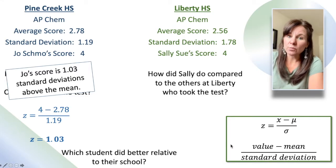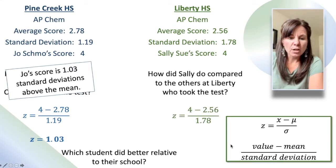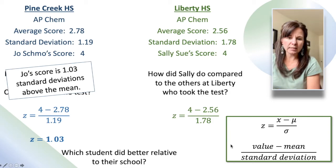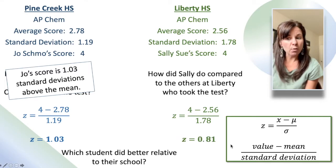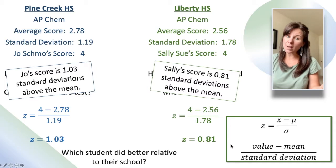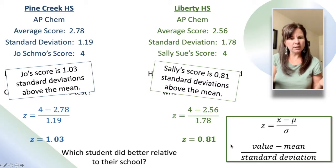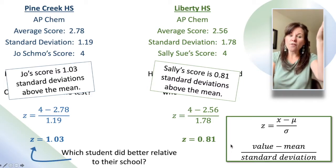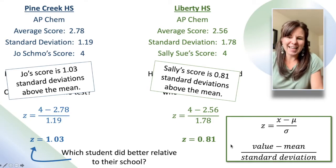Okay, how did Sally do? We'll check out her z-score with the same process: 4 minus the average at Liberty, 2.56, divided by the standard deviation, and Sally's z-score is 0.81. So her score is 0.81 standard deviations above the mean. So who did better relative to their school? They both scored above the mean, but Joe scored farther above the mean than Sally did.